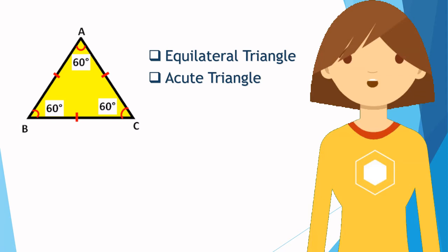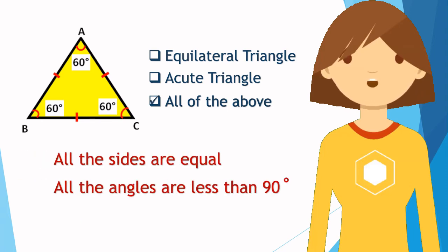Can you tell if this is an equilateral triangle, acute triangle, or both? Yes, that's right, the answer is both because all the sides are equal and all the angles are less than 90 degrees.